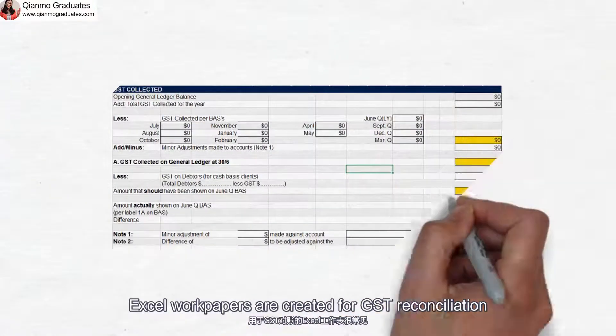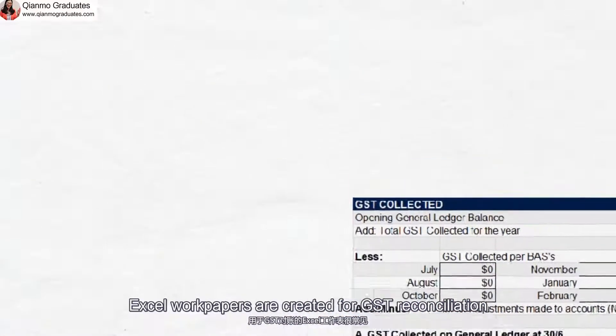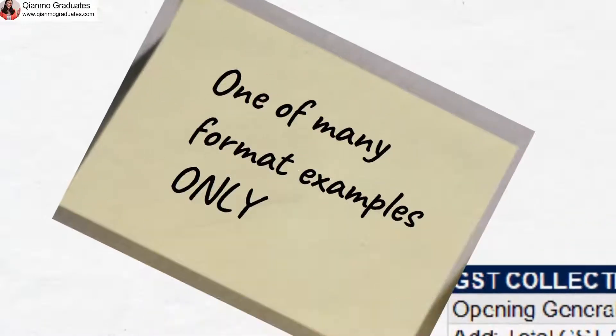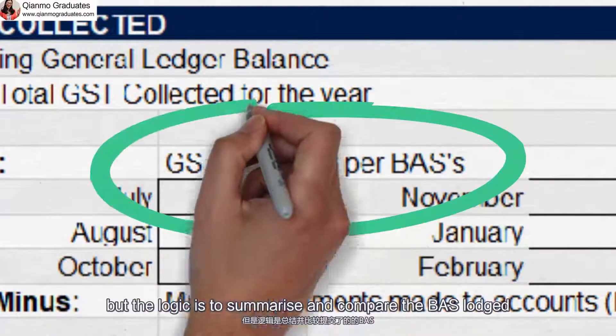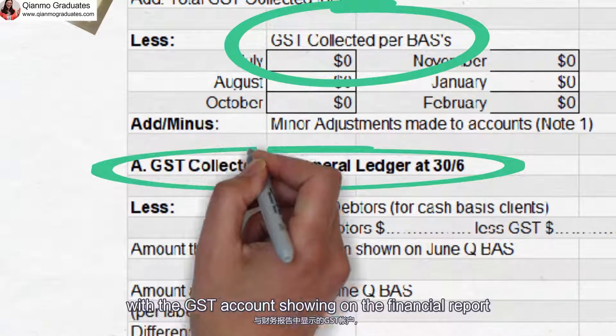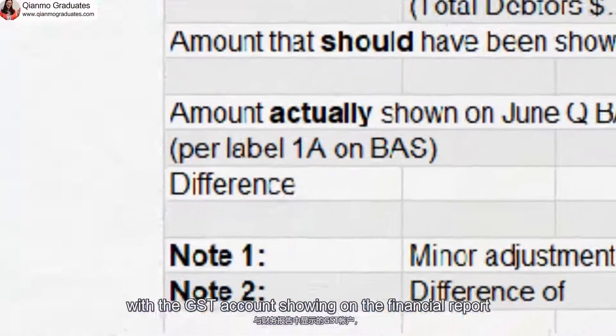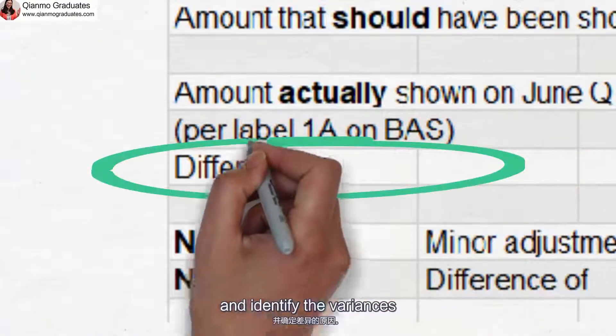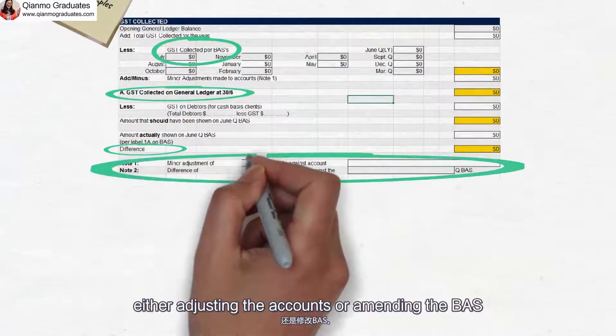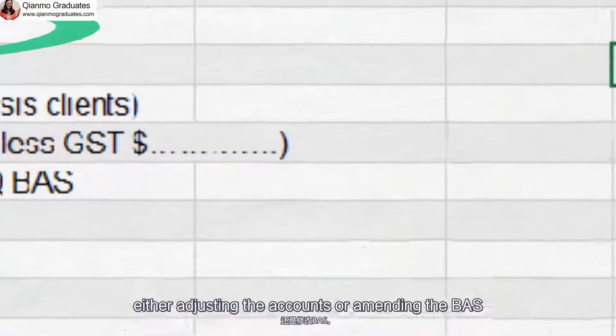To assist us in identifying the variance, Excel workpapers are created for GST reconciliation. The exact details and the layout of the workpaper is different in different firms, but the logic is to summarize and compare the BATS lodged with the GST account shown on the financial report and identify the variances so that the decisions can be made on either adjusting the accounts or amending the BATS.